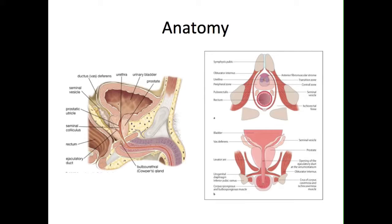This communication can be clinically significant, as it is a potential route of spread of infection or malignant cells to the sacral vertebrae. Lymph from the prostate gland mainly drains into the internal iliac nodes, although some does drain into the sacral lymph nodes.